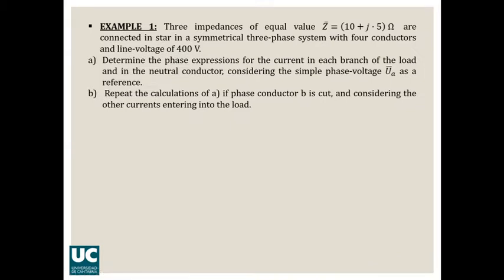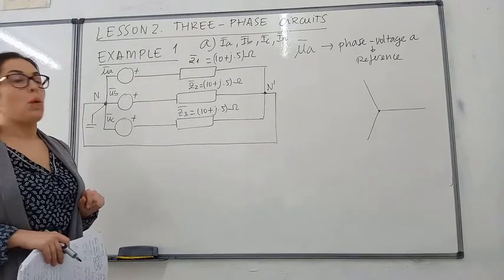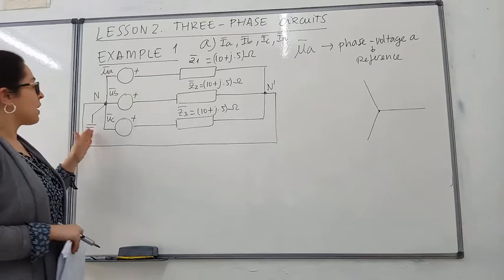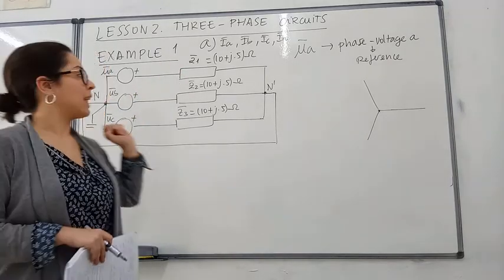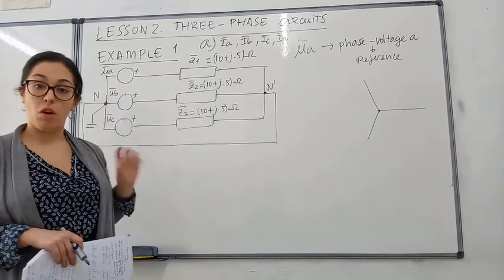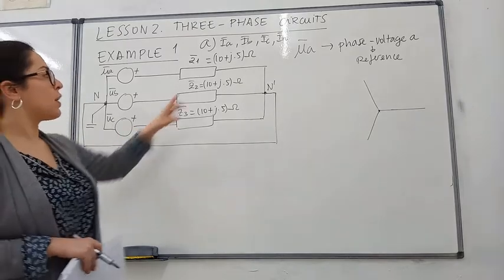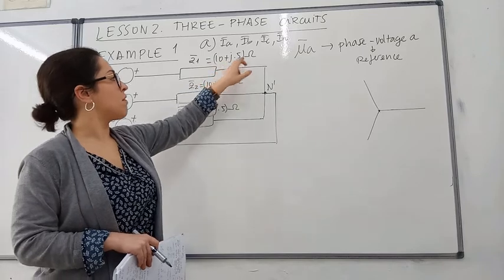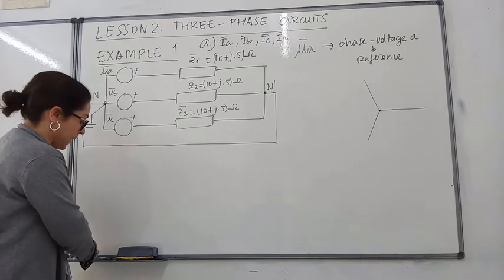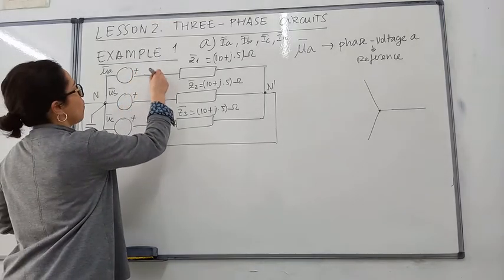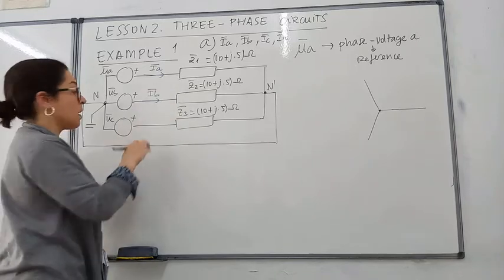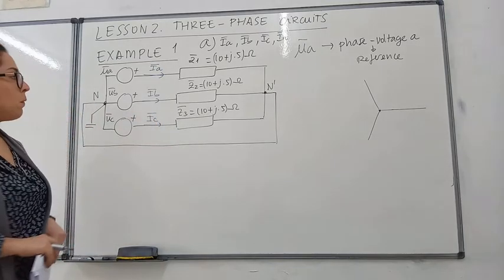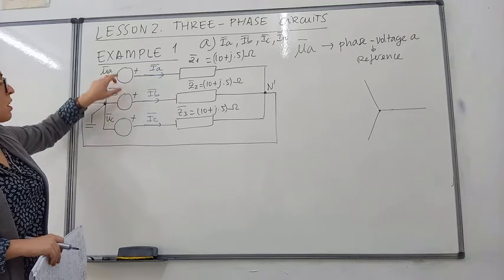Here you have example 1. Now we are in example 1 of lesson 2, which is three-phase circuits. Here we have a three-phase circuit with a star connection and we have a balanced load. That means that the impedance in each phase of the three-phase circuit has the same value — in this case, 10 plus j5 ohms. What do they ask here? They want that we calculate the value of line current A, line current B, and line current C. The currents are generated in these three generators, they pass through the load, and then they return through the neutral conductor.